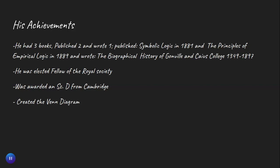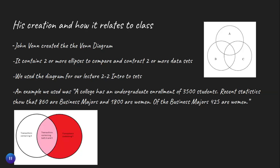The most important achievement we will be discussing is the Venn diagram. The Venn diagram was created by John Venn. They usually contain two or more ellipses to compare and contrast two or more data sets that are presented. Here are examples of two of the many kinds, and there are some examples we used for a problem in one of our lectures — Intro to Set.